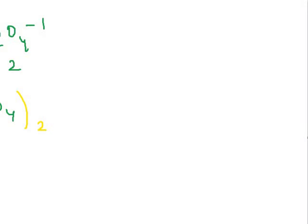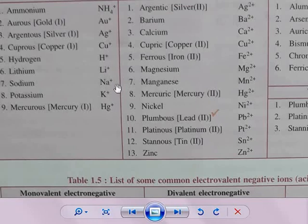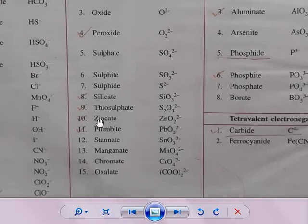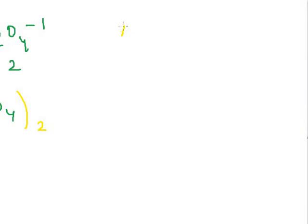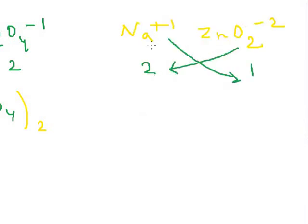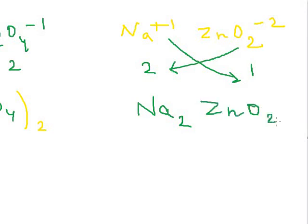Finally, let's write the formula for sodium zincate. Sodium (Na) has charge +1. Zincate (ZnO₂) is a divalent radical with charge −2. Cross-multiplying: the 2 from zincate goes below sodium, and the 1 from sodium goes below zincate. Sodium gets subscript 2, so we write Na₂. Zincate (ZnO₂) gets subscript 1 — no bracket needed since it's just one unit. So the formula for sodium zincate is Na₂ZnO₂.